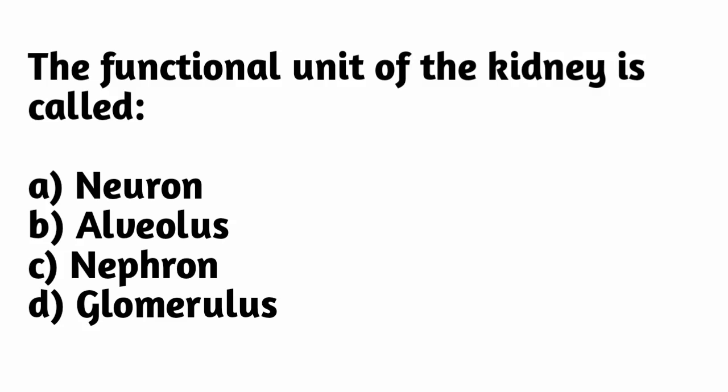The functional unit of the kidney is called — the correct option is option C: nephron.